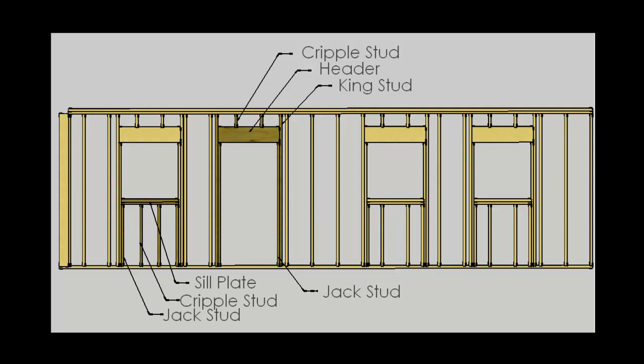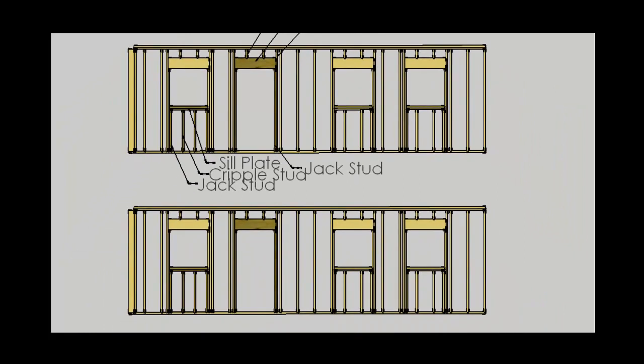What if this were a non-load-bearing wall? In that application, the difference lies in the head of the opening. Because we don't have an overhead load to worry about transferring, there is no need for the larger headers above the opening. Those headers are removed and replaced with smaller headers — nothing more than the same framing material used for the rest of the wall. If we're talking about 2x4s, that header would be nothing more than a 2x4 turned on its side, with longer cripples extending down to the header. Because there is no load to transfer, the only goal is filling in the open space above the window or door so that we have something for our finished materials to attach to.